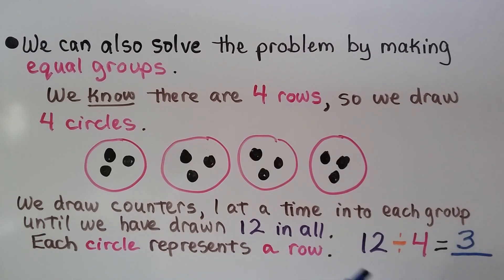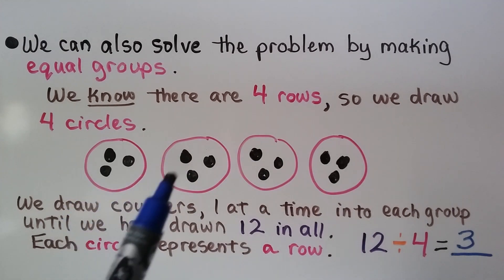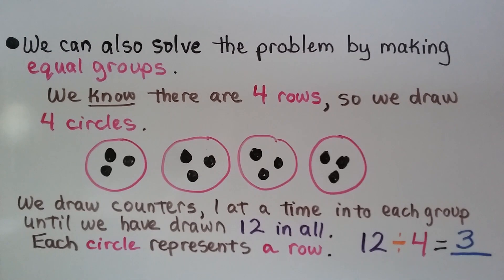We can see that we put 3 in each group. That means 12 divided by 4 is equal to 3. Just remember to take turns putting them into the circles or groups so that you put an equal amount into each group.